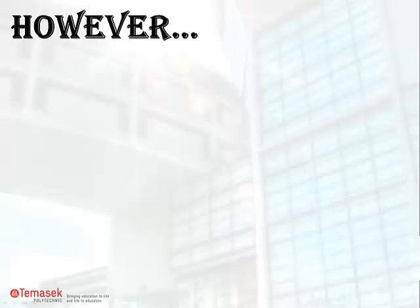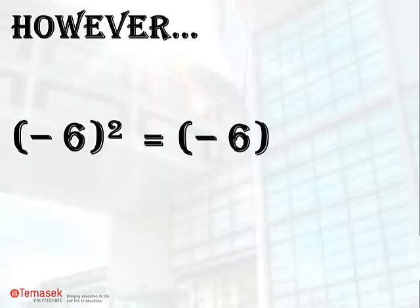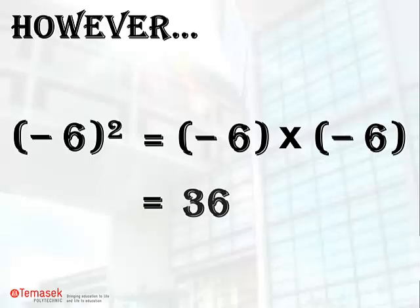However, this is not the same for the other term. Open bracket negative 6 close bracket squared equals negative 6 times negative 6. You have to multiply in this way because the power 2 belongs to both the negative sign and the digit 6. The final value equals 36, and it is a positive number.